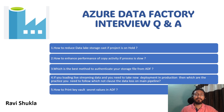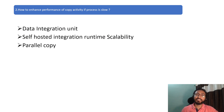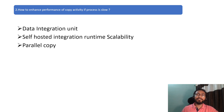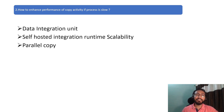Second question: how to enhance performance of copy activity when the process is slow. The answer involves three major steps. First is the Data Integration Unit (DIU). Once you set up a DIU and run a pipeline — I'll take the example of copy activity from blob to blob — you go to the settings of your ADF pipeline for copy activity. You have the option to choose how many DIU units to assign, up to 256, based on your requirement.